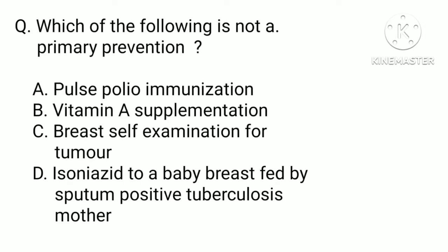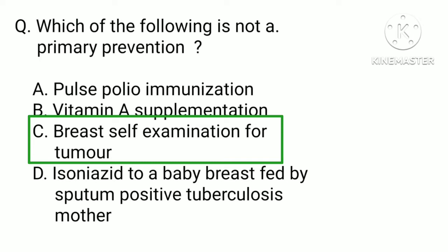Which of the following is NOT a primary prevention: a) pulse polio immunization, b) vitamin A supplementation, c) breast self-examination for tumor, or d) isoniazid given to a baby breastfed by a sputum-positive tuberculosis mother? The correct answer is c) breast self-examination for tumor. Breast self-examination for tumor is a secondary level of prevention.